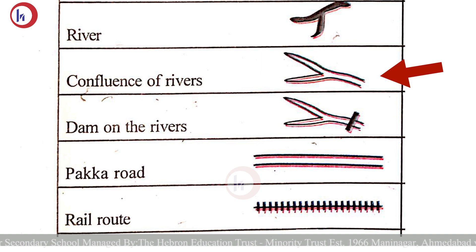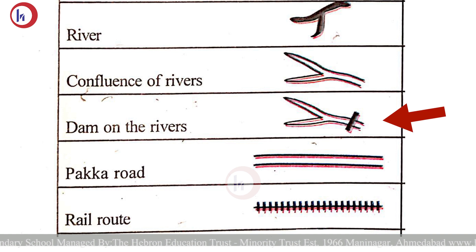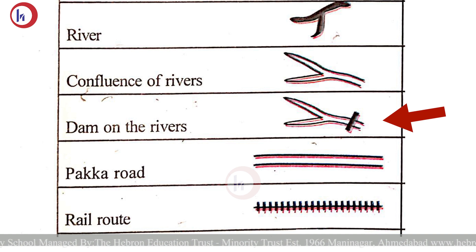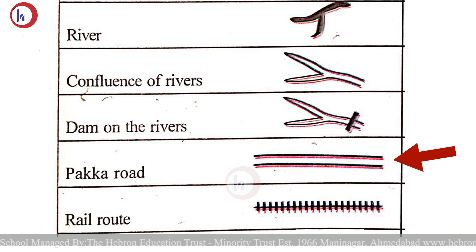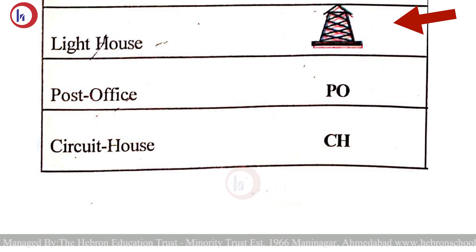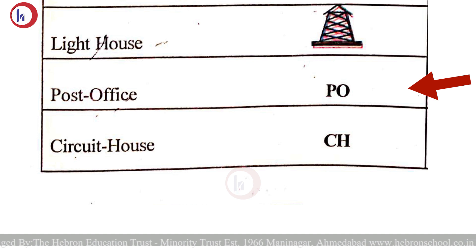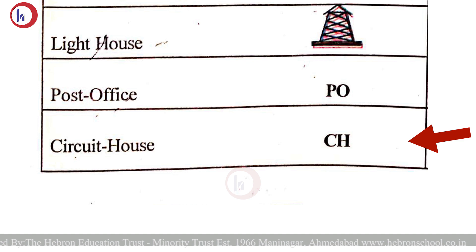Confluence of river means the meeting of more than two rivers. Dam of the river: a dam is a barrier to stop the flow of water. Pakka road: draw two parallel lines. Rail road: draw one horizontal line and over that line draw vertical lines. Lighthouse: here you see the symbol for it. Post office is denoted by the alphabet PO. Circuit house is also denoted by the alphabet CH.